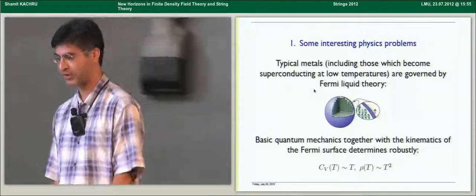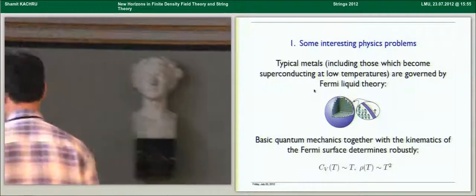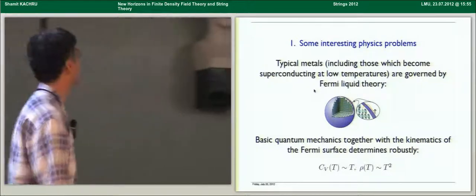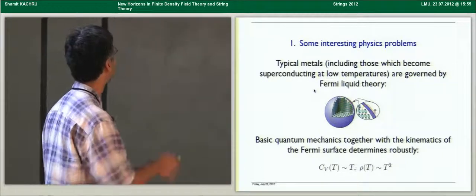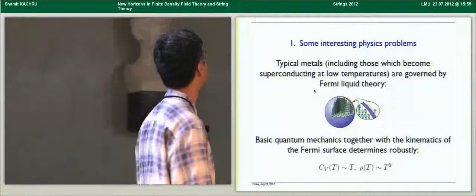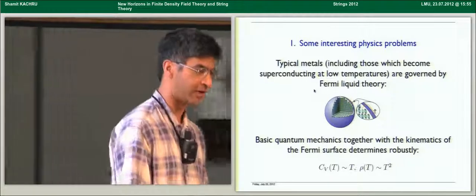The best way to start any physics talk is by listing some interesting physics problems, and nature provides us with a host of those. Here's one from condensed matter physics. Typical metals, including those you learn about when you take junior statistical mechanics, especially those that also become superconducting at low temperatures, are governed by something called Fermi liquid theory, whose justification Andreas somewhat reviewed.